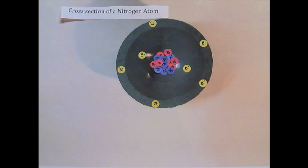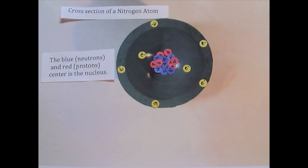This is a cross-section of the nitrogen atom. Blue neutrons and red protons in the center represent the nucleus. The circling yellow balls represent electrons in their orbitals.